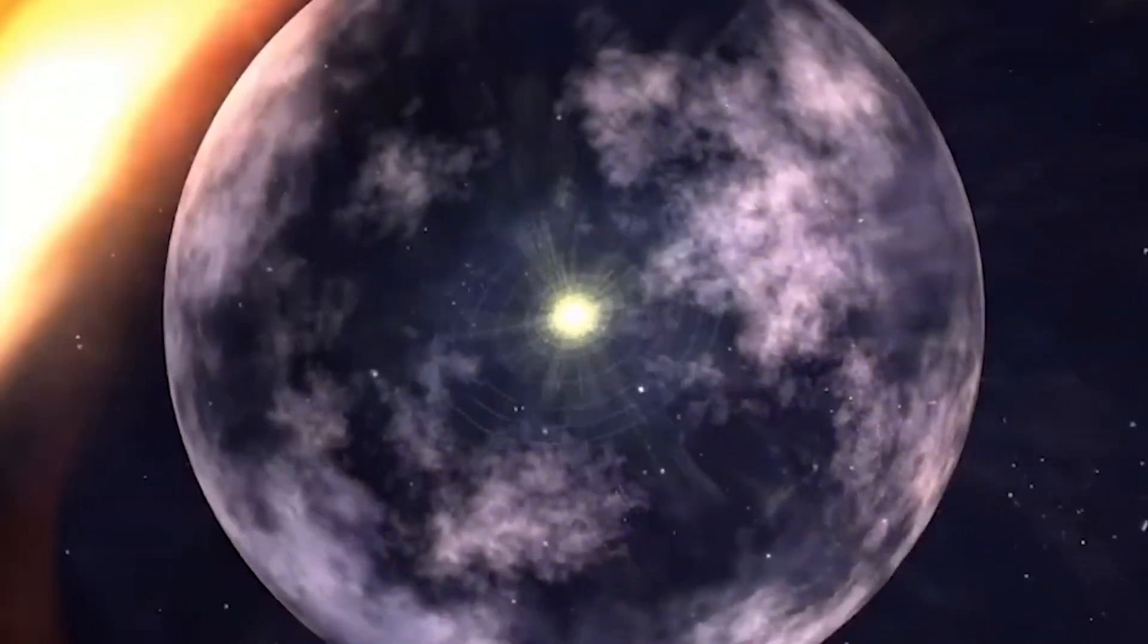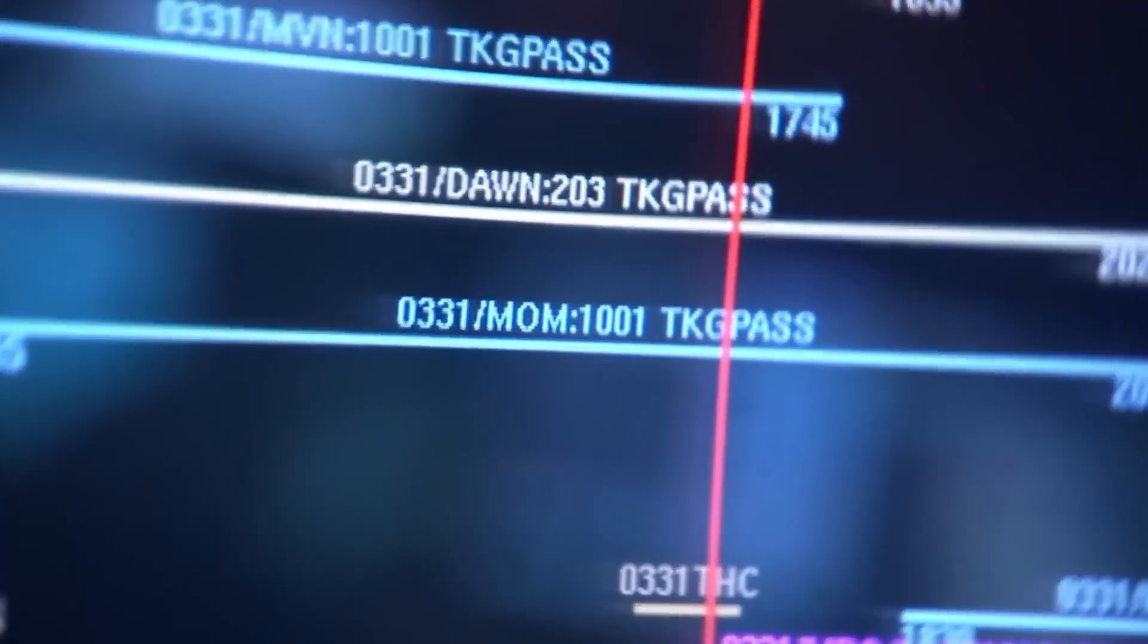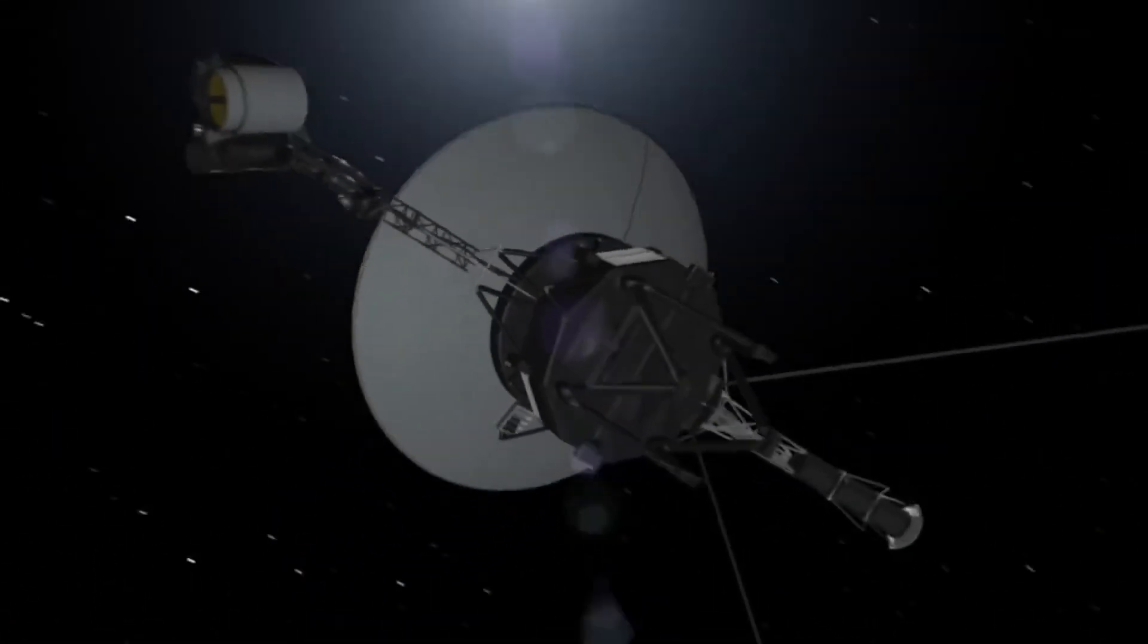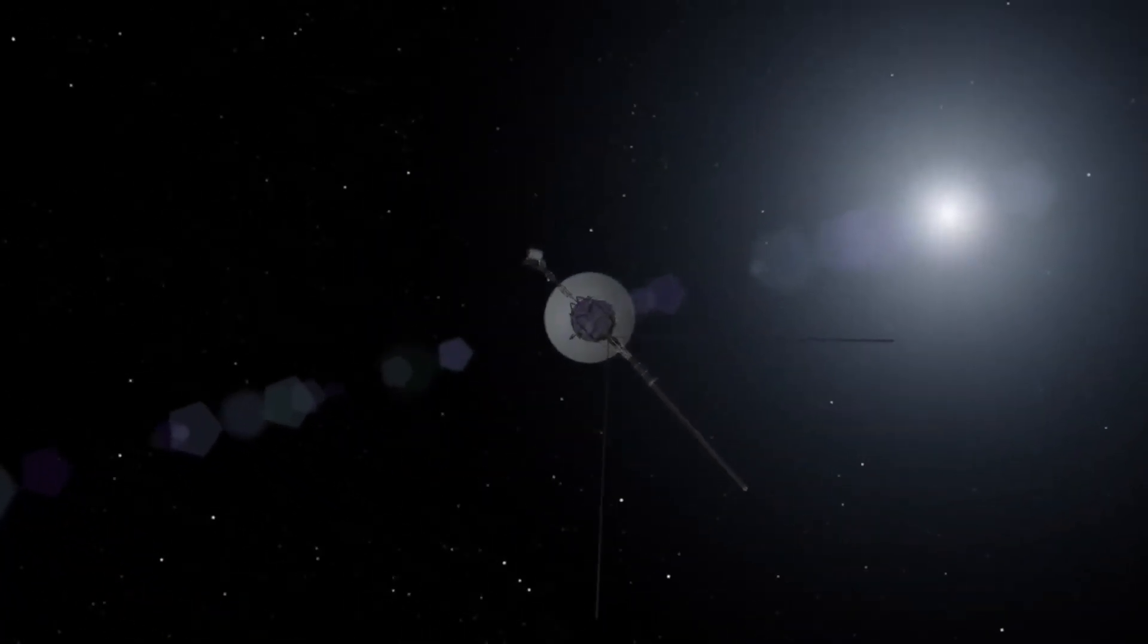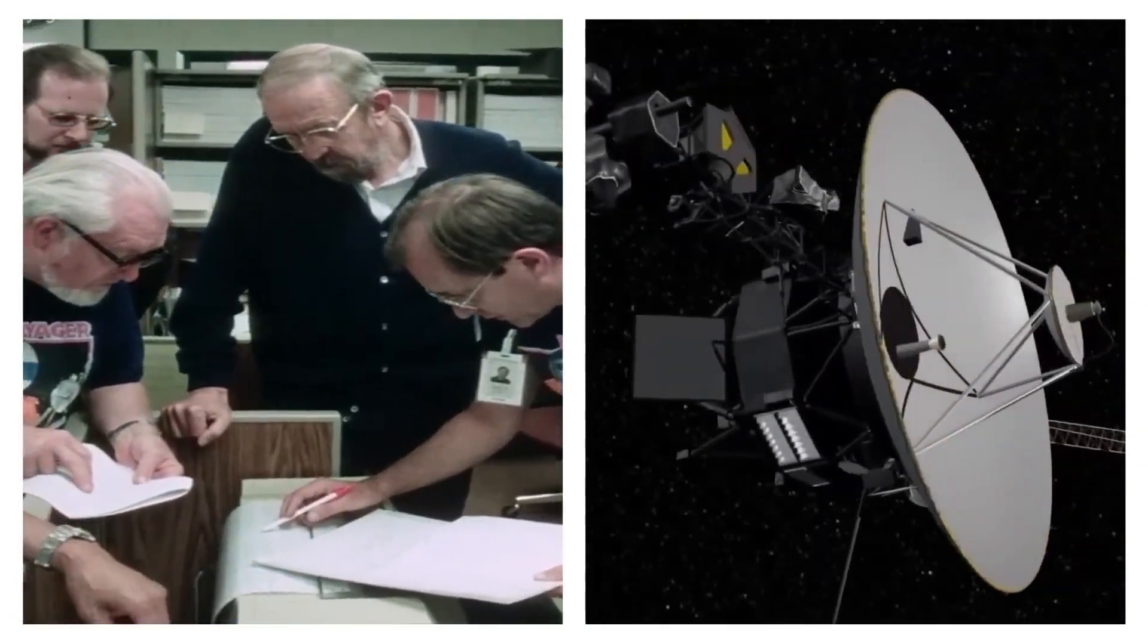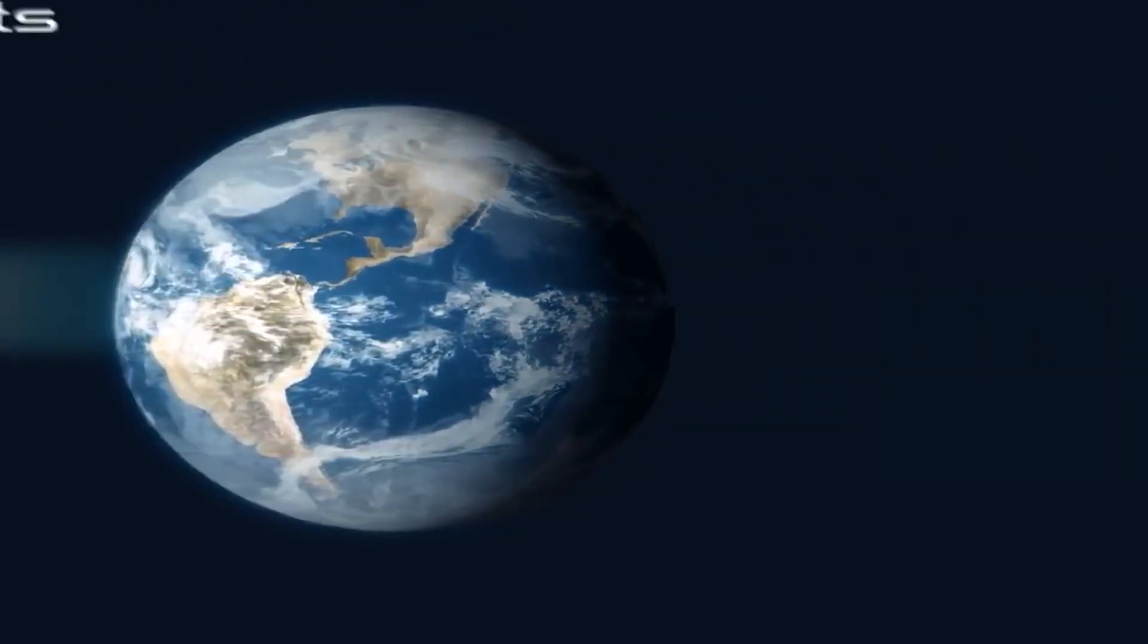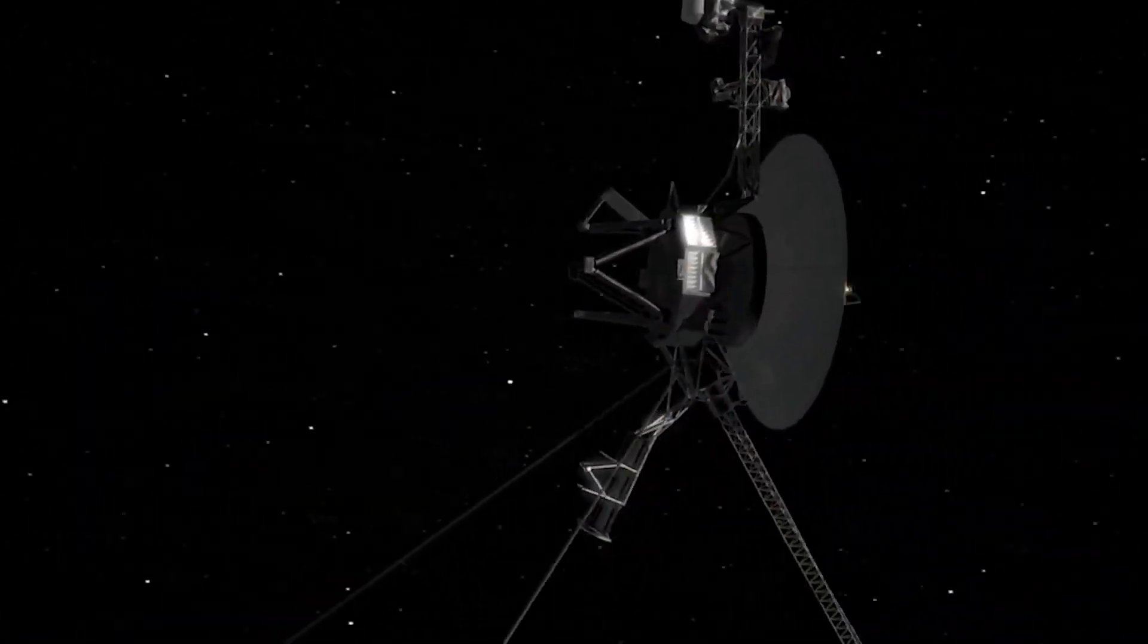Despite its wear and tear, the Voyager team has been able to keep it running smoothly, with only minor hiccups along the way. However, this year, something strange has been happening. The Voyager is now nearly 15 billion miles away from Earth, and the messages it's sending back have been causing concern. It seems that the spacecraft is having difficulty determining its location and trajectory.